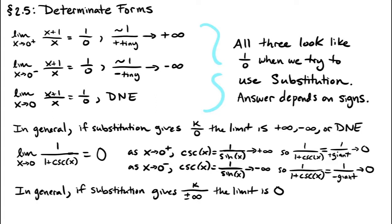In general, when substitution gives you a constant divided by either plus or minus infinity, the limit is 0. A constant divided by 0, or a constant divided by infinity, are both what we call determinate forms. So even though when we get this with the substitution method, we say the substitution method failed, but still, we can use that information to determine the limit with a little bit of carefulness about signs.